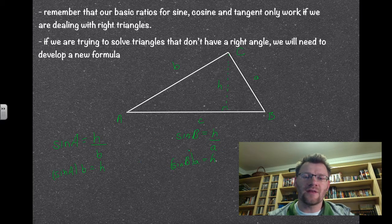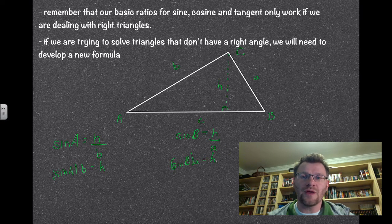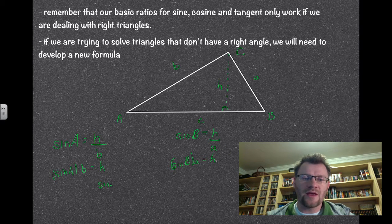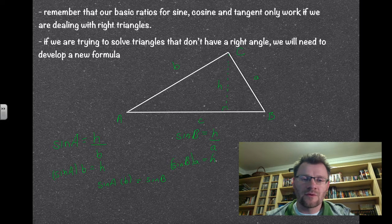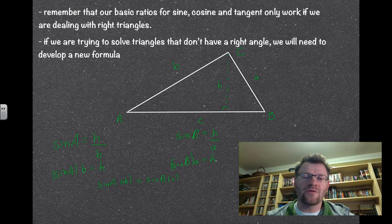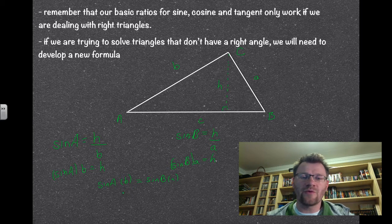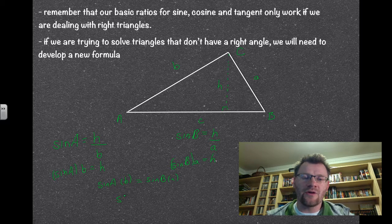That means these two things are now going to be equal to each other, because they both equal h. So we get sine a times b equals sine b times a. What I can do now is divide both sides by b, and then divide both sides by a, and I get our law of sines.